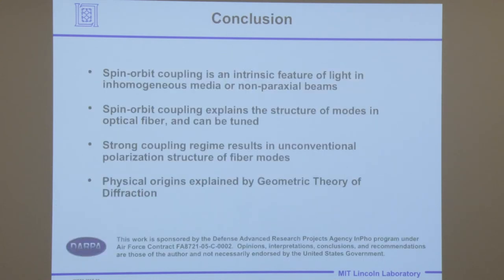To wrap up: we saw that spin-orbit coupling is an intrinsic feature of light in inhomogeneous media or non-paraxial beams. It explains the structure of modes in optical fiber, both low and high contrast. It explains this unconventional polarization structure of high-contrast fiber modes. And the Keller-Rubinoff method is what enabled all of it.